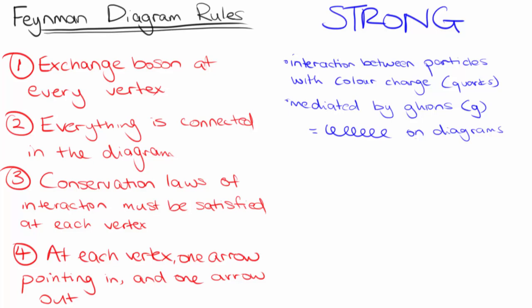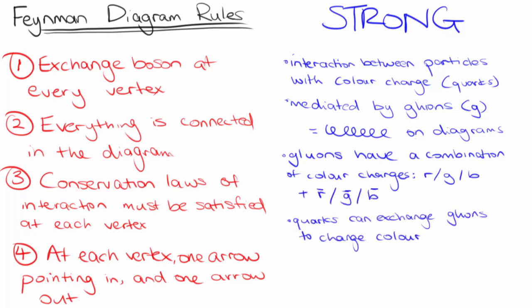Quarks are then able to change color by exchanging gluons. This makes Feynman diagrams a little trickier to draw, as you will have to make sure both charge and color charge are conserved at each vertex.